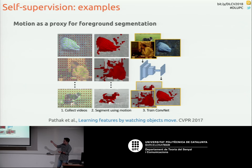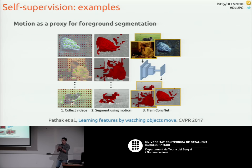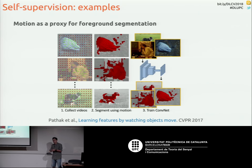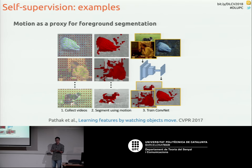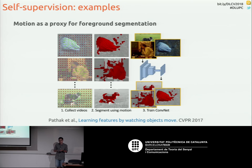Another example is using optical flow, which tells you where a given pixel in one frame went in another frame. If you have many videos and compute optical flow, the pixels that move the most probably belong to the foreground. That's an assumption — not 100% accurate, but it works to give a foreground-background segmentation mask. You can pre-train on this task in a self-supervised way — nobody gave you the right labels, but the assumption is good enough — and then fine-tune for semantic segmentation.